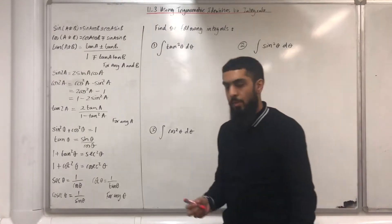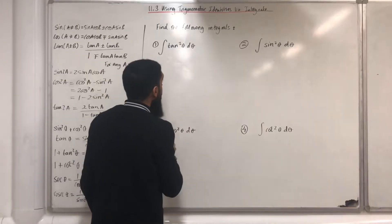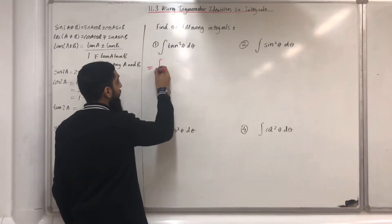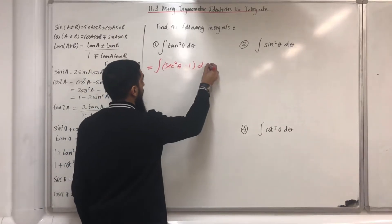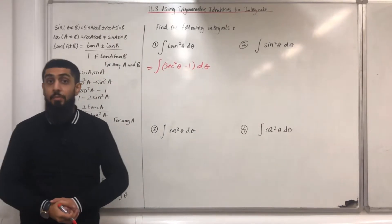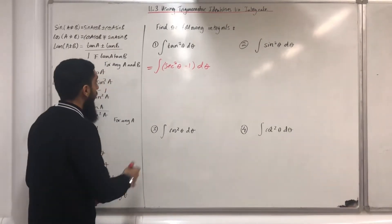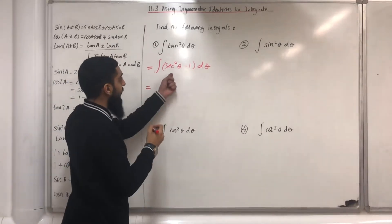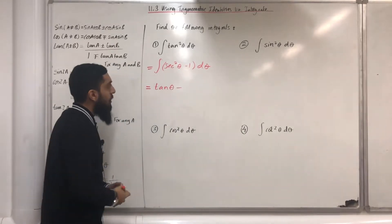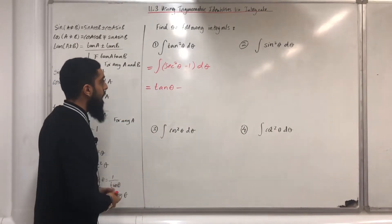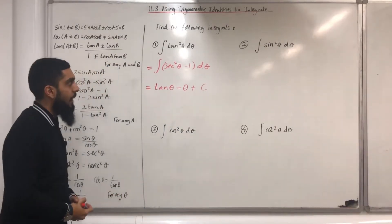So let's start off with question number one. The integral of tan squared theta d theta is the same as the integral of sec squared theta minus 1. I've made tan squared theta the subject in the identity 1 plus tan squared theta equals sec squared theta. I know how to integrate sec squared theta - it will just be tan theta. Minus, I know how to integrate 1 - it will just be theta. Plus c, the constant of integration.